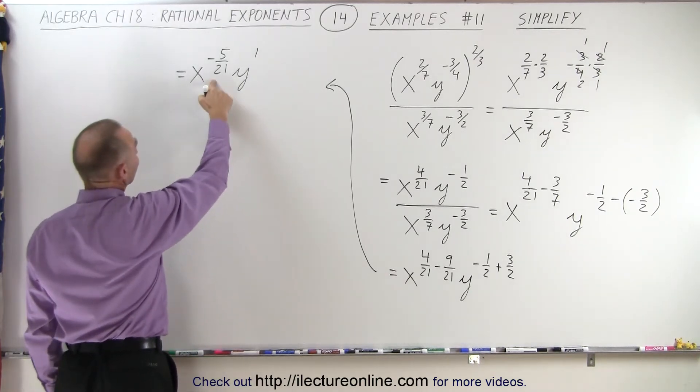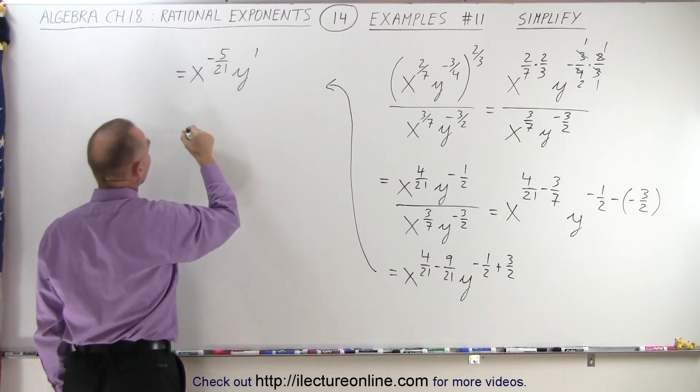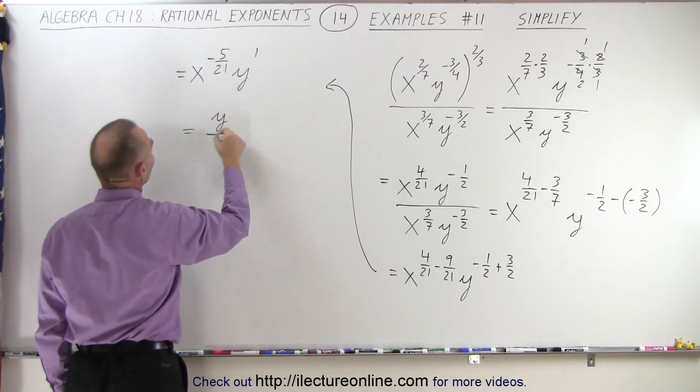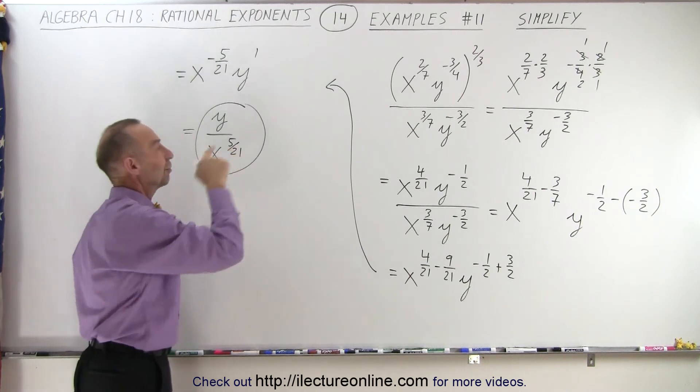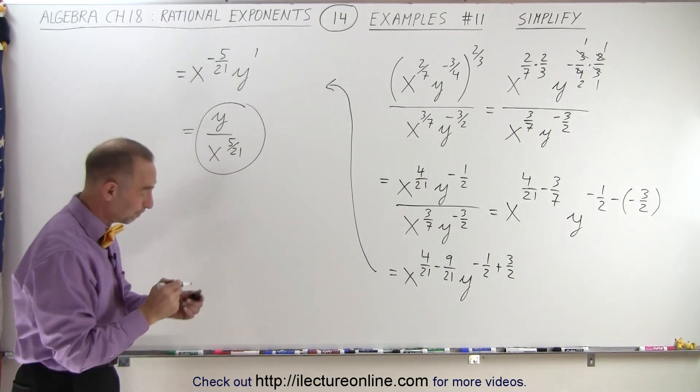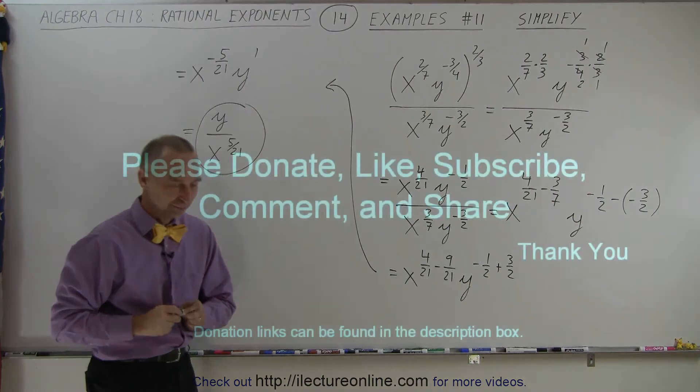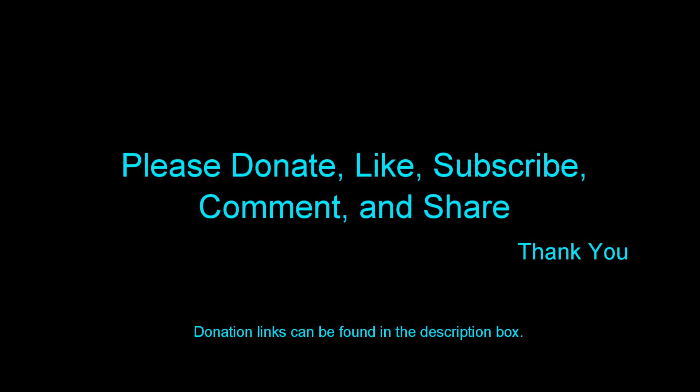And of course, we don't like negative exponents, so we bring that to the denominator. So this becomes y divided by x to the 5 over 21. And that would then be the simplified form of our original expression. And that is how it's done.